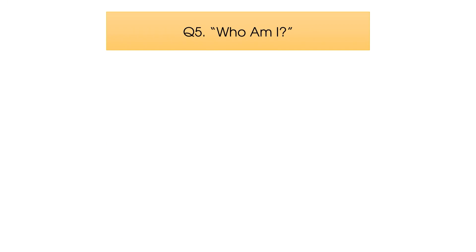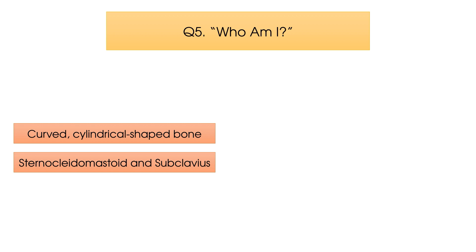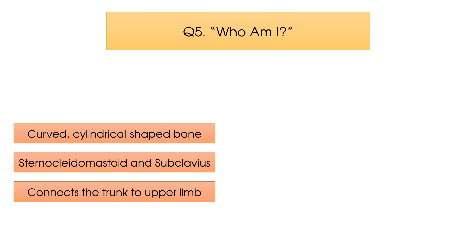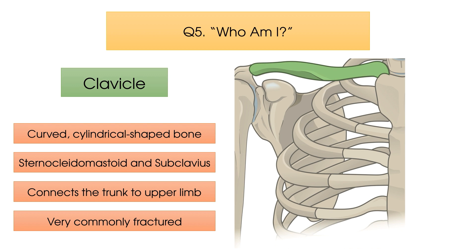And finally, question number five: can you identify the bone being described here? This bone is a curved cylindrical shaped bone which provides muscle attachments for the sternocleidomastoid and subclavius muscles. It connects the trunk to the upper limb and as a result is susceptible to being very commonly fractured. Time's up. Well done to all of you who correctly identified the bone as the clavicle.